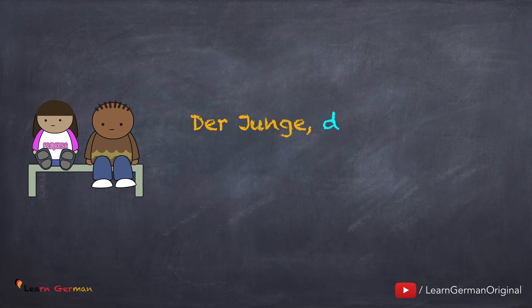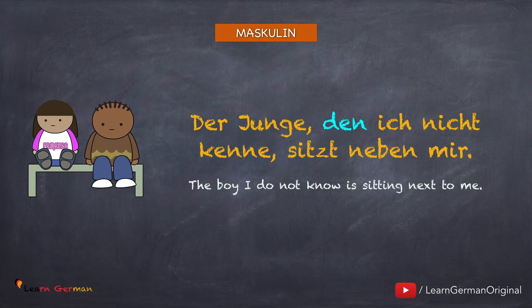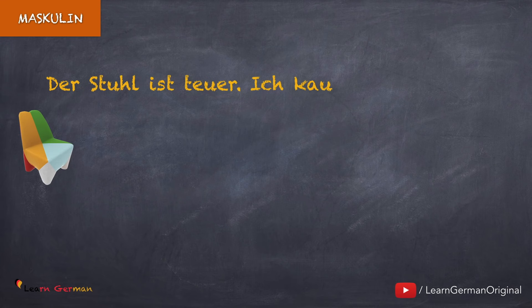Here is the first example for masculine accusative: Der Junge, den ich nicht kenne, sitzt neben mir. As you know, in accusative only the masculine article changes, and the same happens in the case of relative pronouns — only the pronoun for masculine is different. The rest of the pronouns are the same as for nominative.